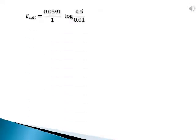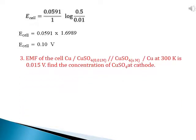By substituting the values of C1, C2, and n: E_cell = (0.0591 / 1) × log(0.5 / 0.01). This simplifies to E_cell = 0.0591 × 1.6989, and the final answer is E_cell = 0.1 volt.